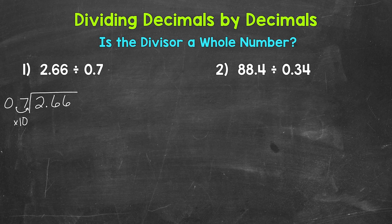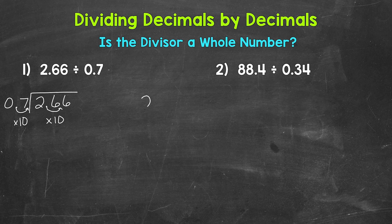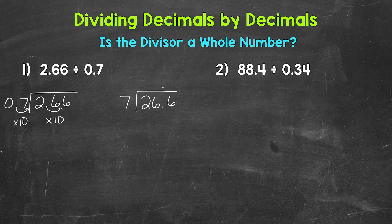Now whatever we do to the outside — the divisor — we must do to the inside — the dividend — in order to keep this problem balanced and equivalent. So we need to multiply the dividend by 10 as well. Let's move this decimal once to the right. Now we can rewrite our new equivalent problem with the whole divisor: 26 and 6 tenths for our dividend and 7 for our divisor. Is our divisor now a whole number? Yes. So we can bring our decimal straight up into our answer and now go through the division process.